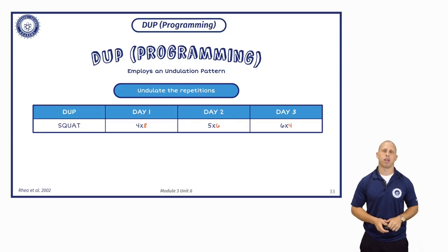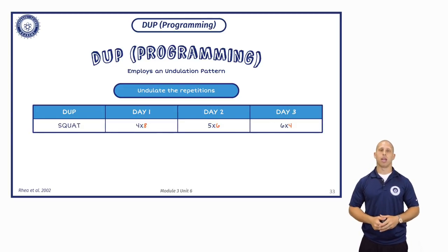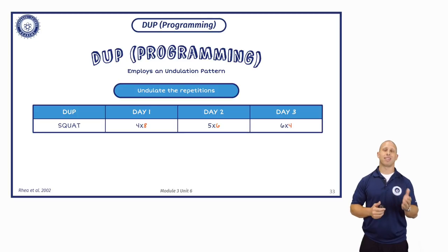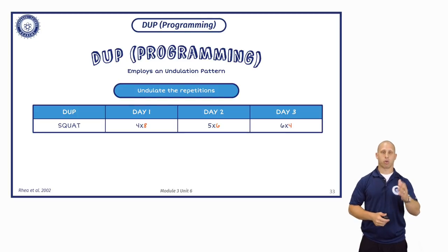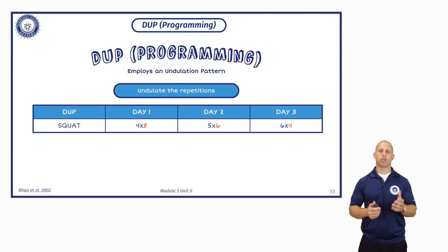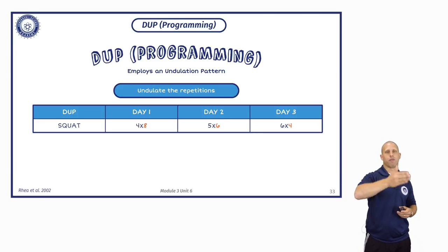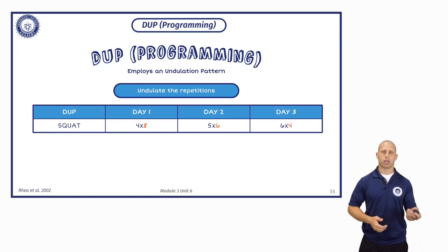We can see this example here. The individual is training three times a week, and we're looking at sets times repetitions: four sets of eight, five sets of six, and six sets of four. The four in orange represents the repetitions, showing we have eight, six, and four. I call this a simple undulation pattern.